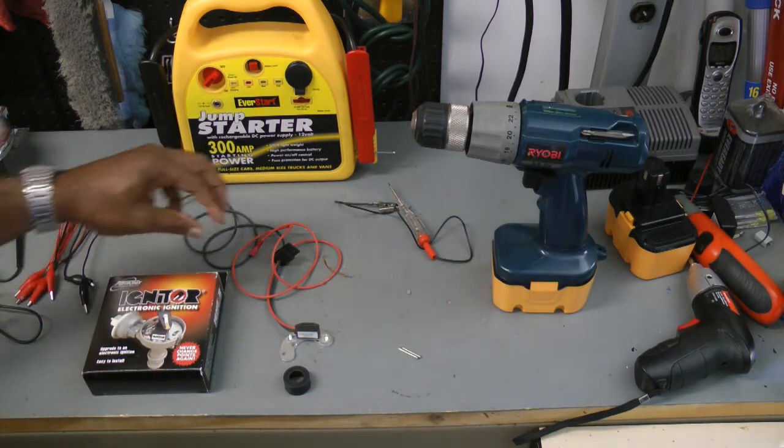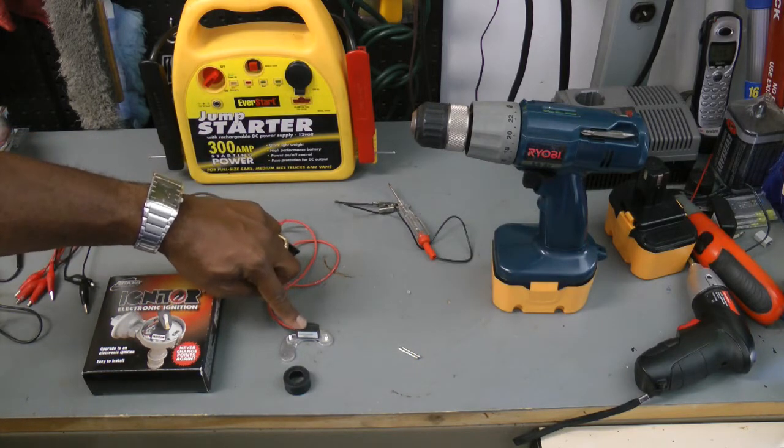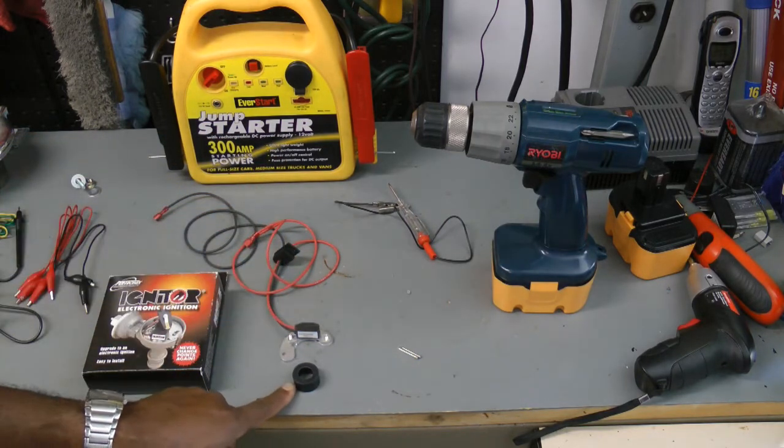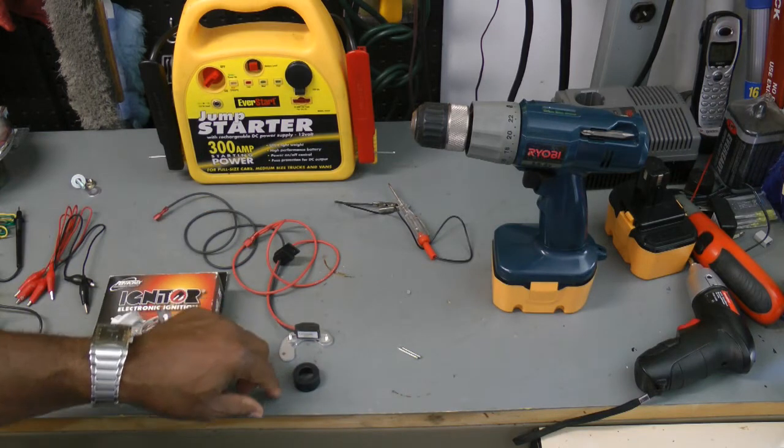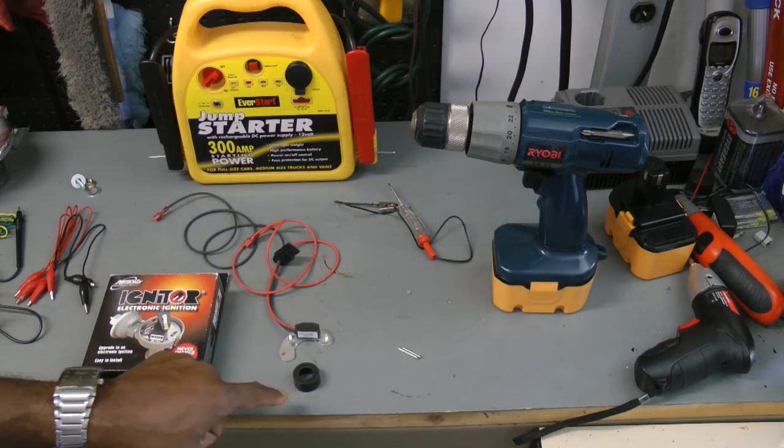So what I'm going to use is my Pertronics. What comes in the kit is actually the module, the igniter unit, the magnet. Under this piece of plastic is actually a series of magnets around. I assume there's six of them for my six-cylinder engine.